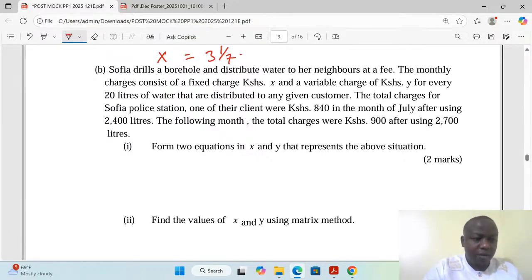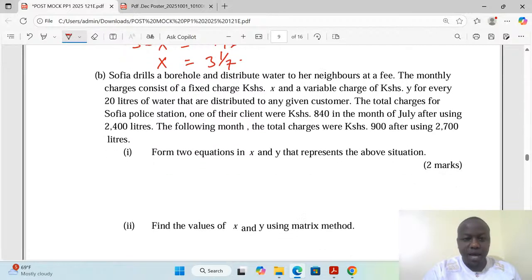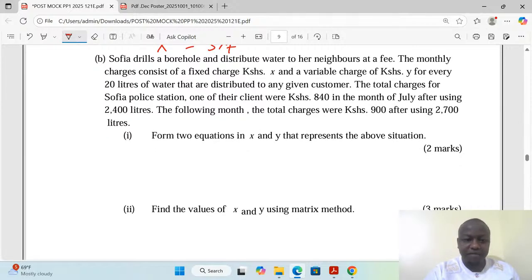Part (b): Sofia drills a borehole and distributes water to her neighbors at a fee. The monthly charges consist of a fixed charge that is x and a variable charge that is y for every 20 liters of water that are distributed to any given customer. The total charges for Sofia police station, one of their clients, were 840 Kenya shillings in the month of July after using 2,400 liters. The following month the total charges were 9,000 Kenya shillings after using 2,700 liters.